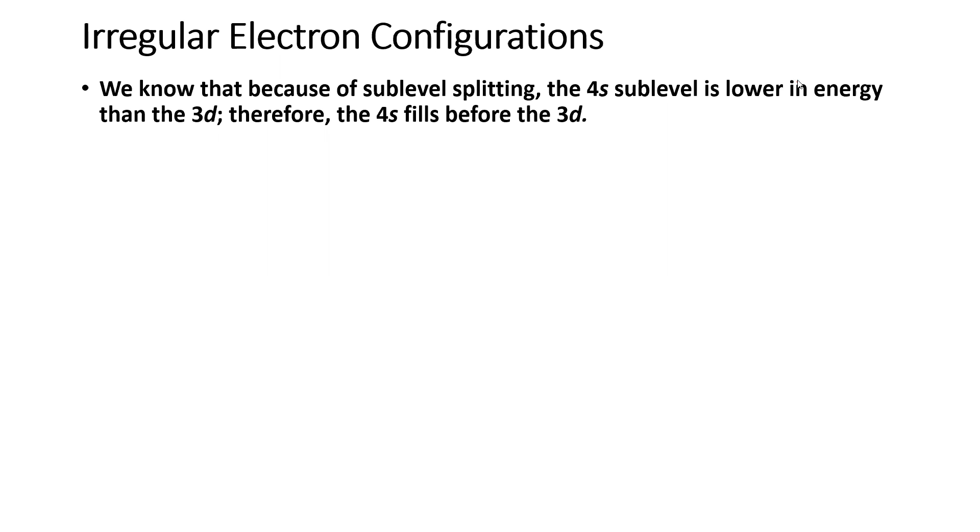This particular video is focused on some of the electron configurations that aren't so simple. So it's really focusing on irregular electron configurations and electron configurations for transition metals and their cations. So I'm going to start with the irregular electron configurations. Again, if you have not watched the basic electron configurations, go back and watch those first.